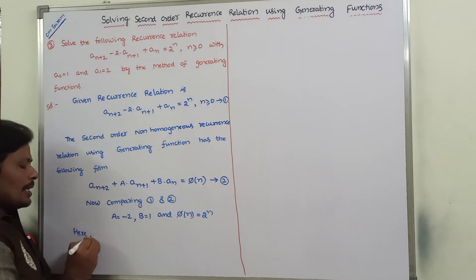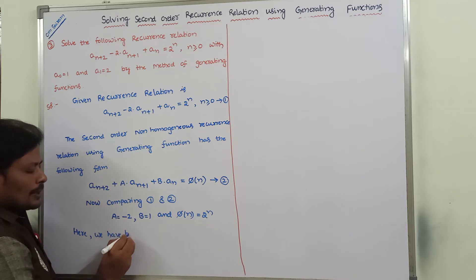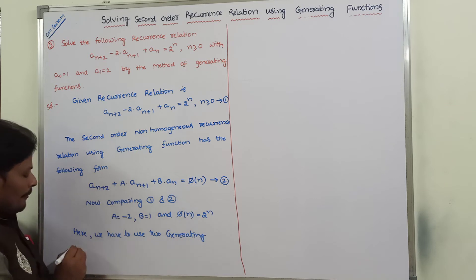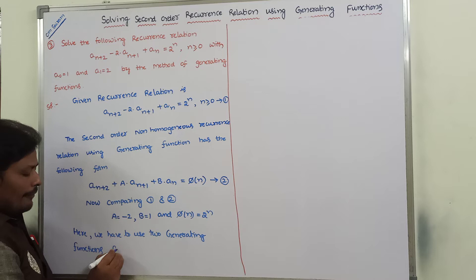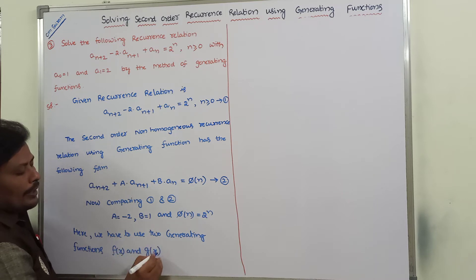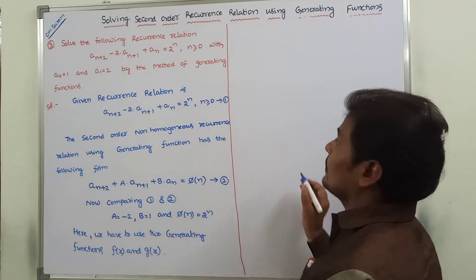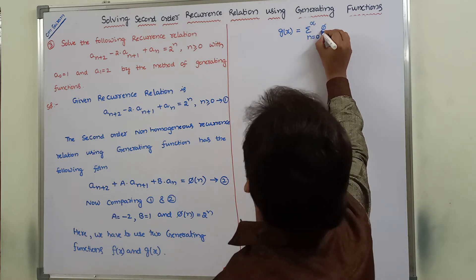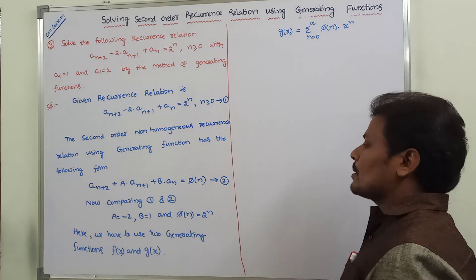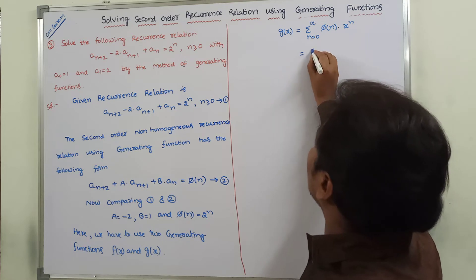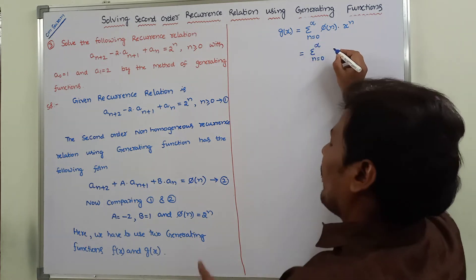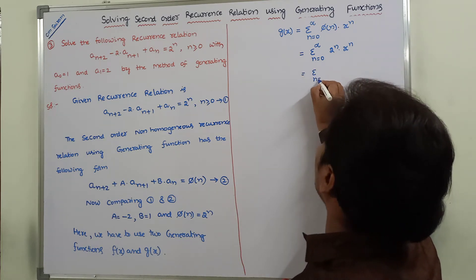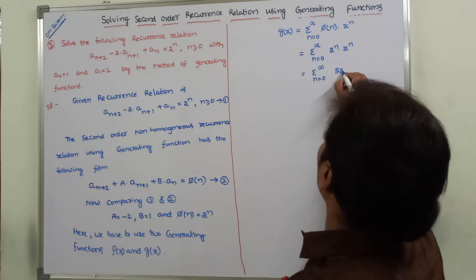We need to use two generating functions: f(x) and g(x). First, we go for g(x). g(x) is equal to the sum from n=0 to infinity of π(n) times x^n. Since π(n) = 2^n, this becomes the sum from n=0 to infinity of 2^n times x^n, which can be written as the sum of (2x)^n.